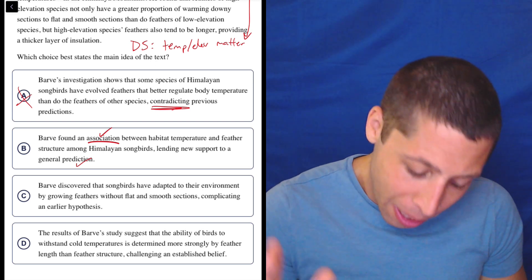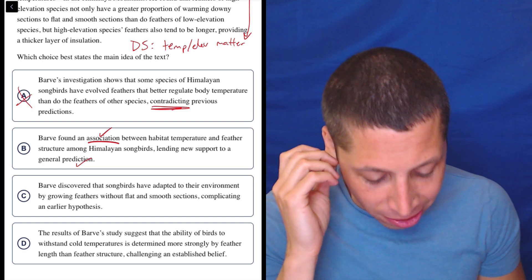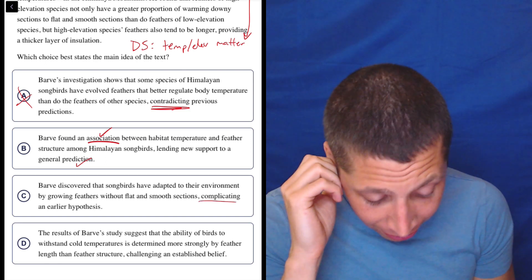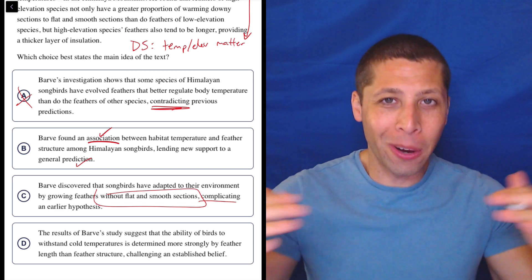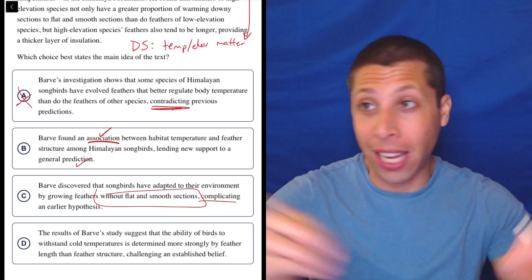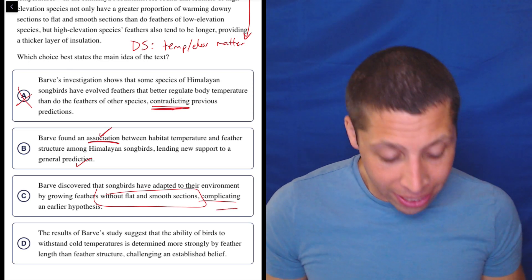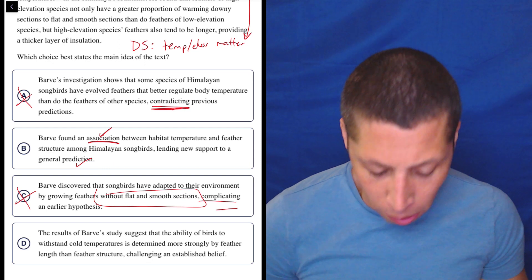C, Barve discovered that songbirds have adapted to their environment by growing feathers without flat and smooth sections, complicating an earlier hypothesis. Again, I don't, this part I don't care about. The whole point is that the hypothesis before has been supported by what Barve did. Complicating? That seems negative. I'm not going to go with it. It seems like they're supporting each other. So just get rid of it. Don't worry about the details.